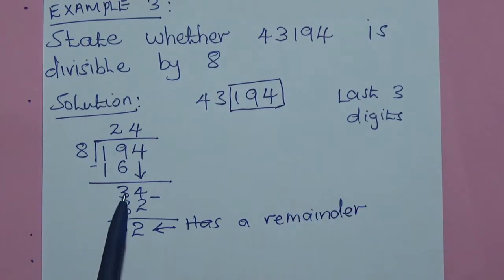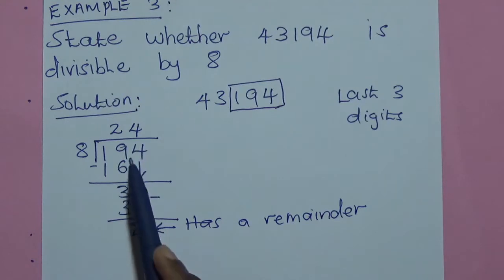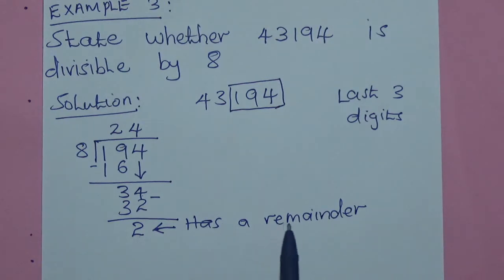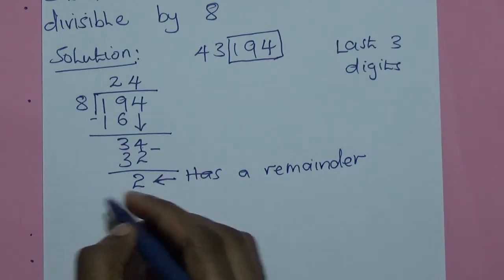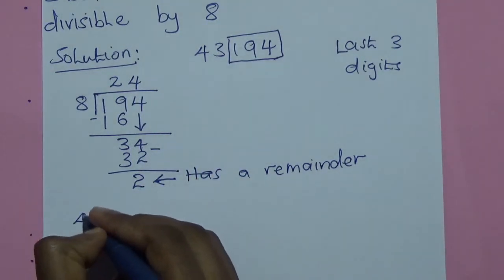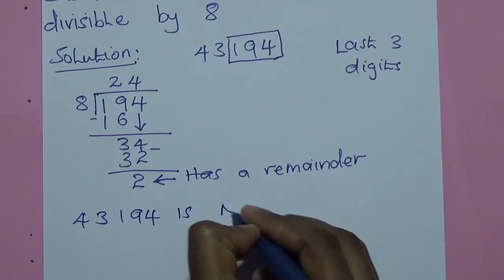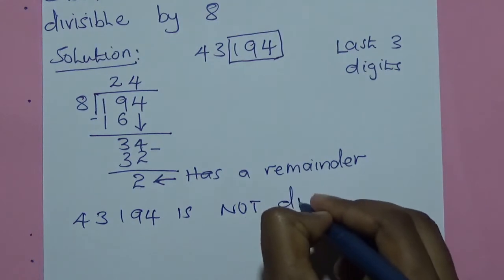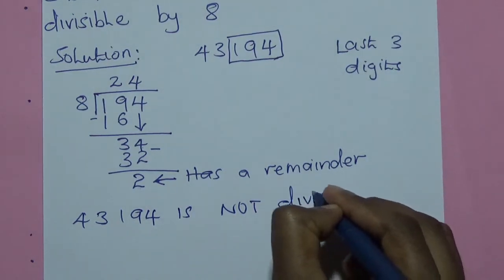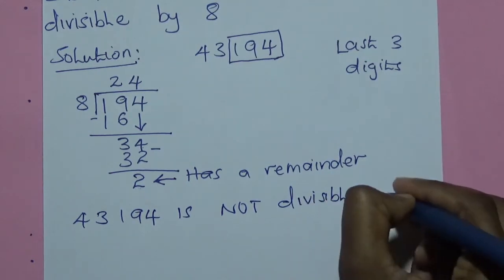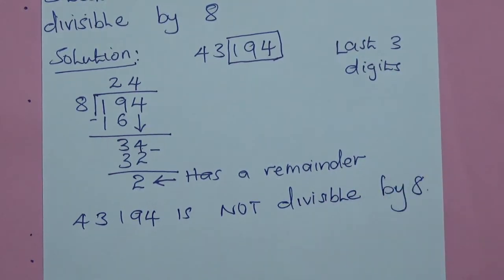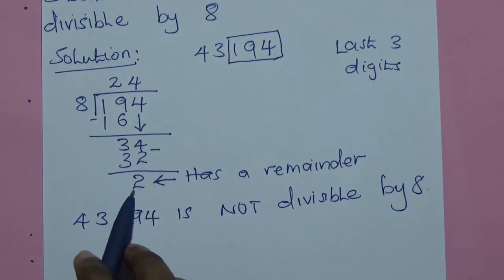Now, when a number or the last three digits has a remainder, it means the number is not divisible by 8 because it has a remainder. So, we can write that our number, which is 43,194, is not divisible by 8.